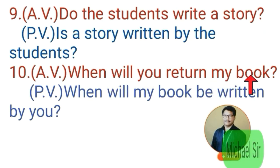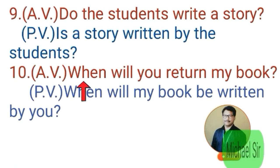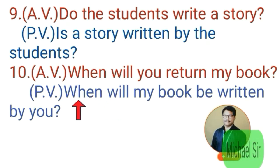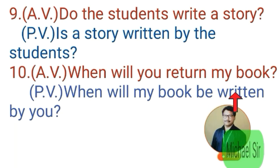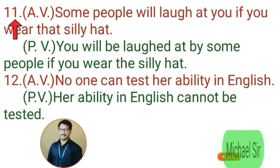Tenth example. Active voice: 'When will you return my book?' This sentence is also an interrogative sentence because it starts with a WH word — 'when.' 'You' is subject and 'my book' is object. When we make passive voice, WH words come as they are, and 'will' also comes as it is. Then soon after, the object comes and becomes subject — 'my book' — then 'be,' then the third form of the verb, then preposition and object.